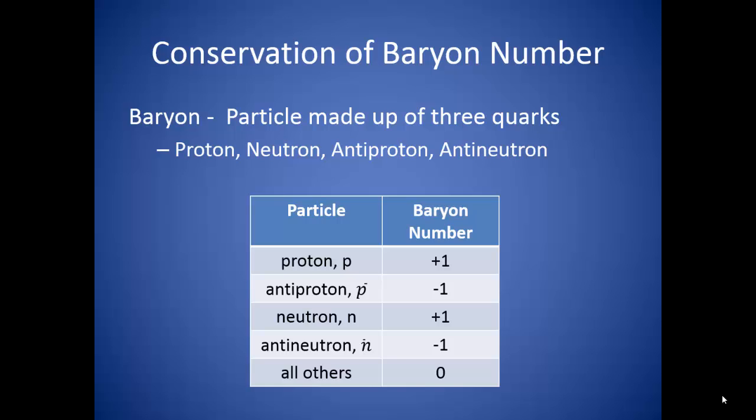The conservation of these numbers occurs when the different combinations of these particles interact. So when we take any combination of these particles and smash them together, the total number of baryons that we end up with will be equal to the number of baryons that we started with.